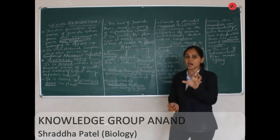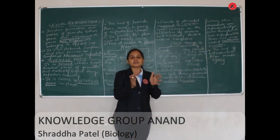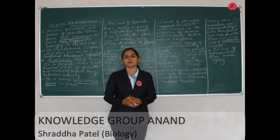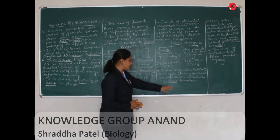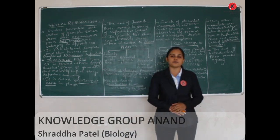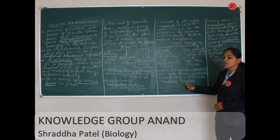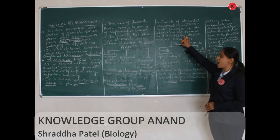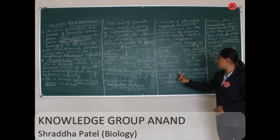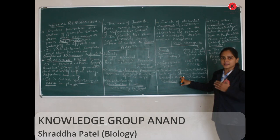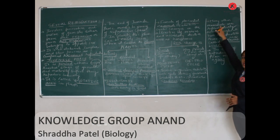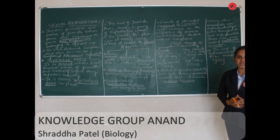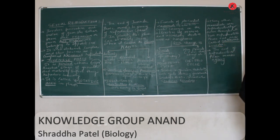Depending on whether these cycles occur only during favorable seasons or continue throughout the reproductive phase of the organism, animals are classified into two categories: seasonal breeders and continuous breeders. Seasonal breeders exhibit such cycles only during favorable seasons, whereas continuous breeders, certain mammals, exhibit these changes throughout their entire reproductive phase.